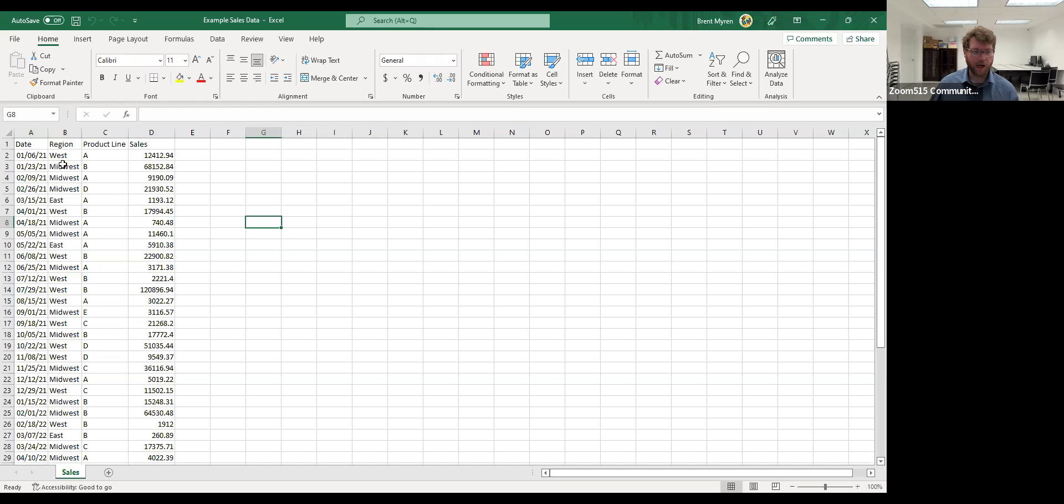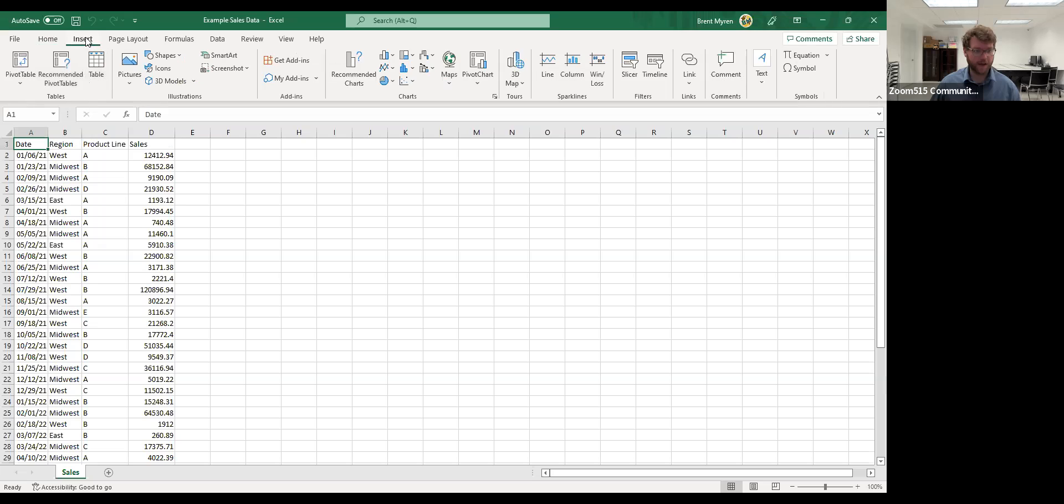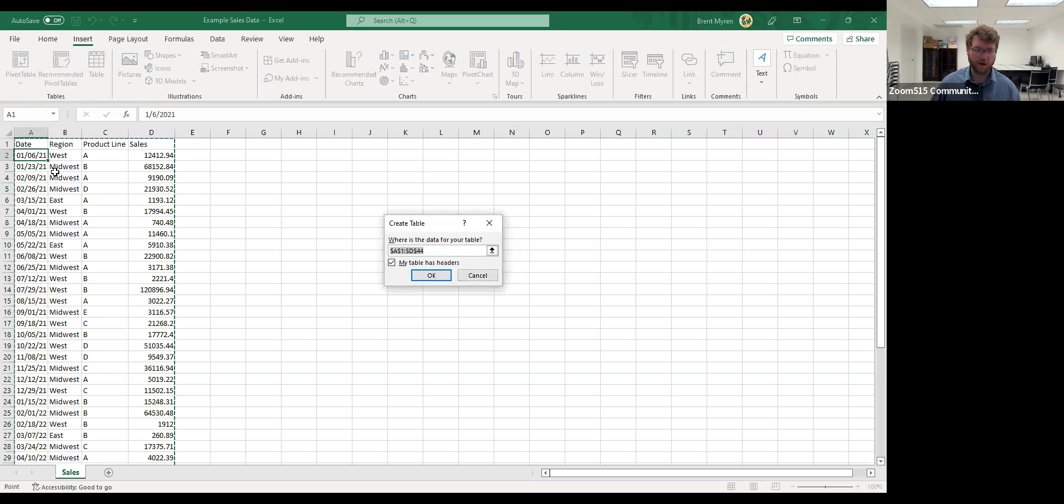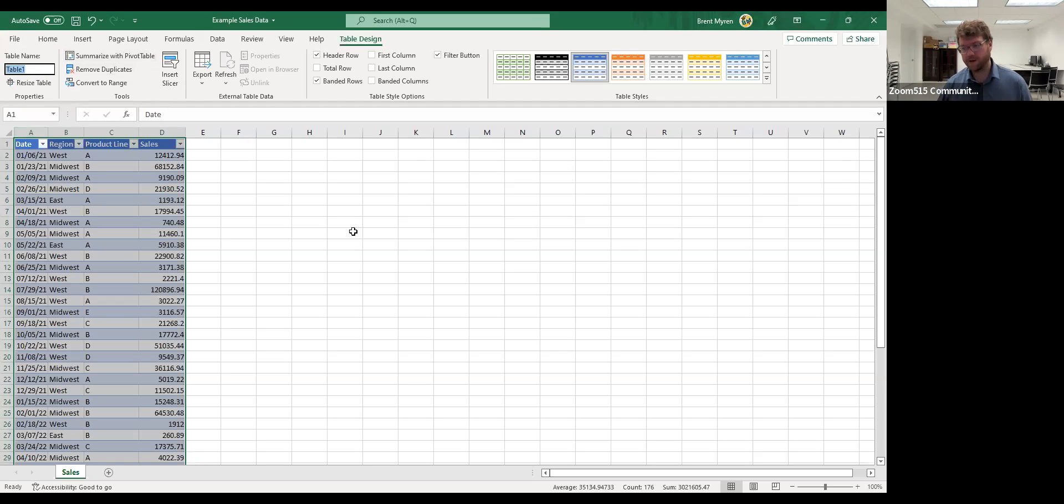So here, we just have some example data and it's some demo test sales data, where we say we look, we have different sales orders from different regions of different product lines with sales amount. And you can obviously tell that this is in that tidy structure where each one of these lines is a sales order and it has these values clearly separated. So I don't have a column that has region and product line and they're separated out into their own columns. And Excel has a useful ability to tell it that this data is part of a table. If you just click this table button right here, it sees it recognizes this range and it will put it into a table.